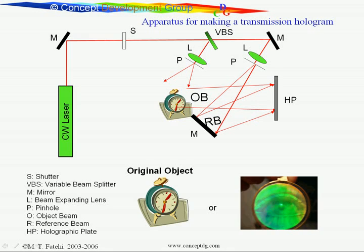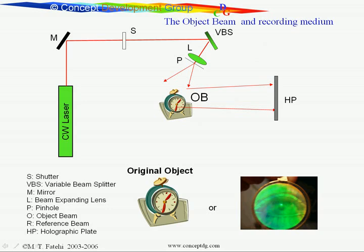The second part of the beam goes through another mirror or set of mirrors and lenses and pinholes, and it is expanded and directly shines at an angle to the same holographic plate. The two beams simply combine and shine, and then we will process the photographic film and put it back.